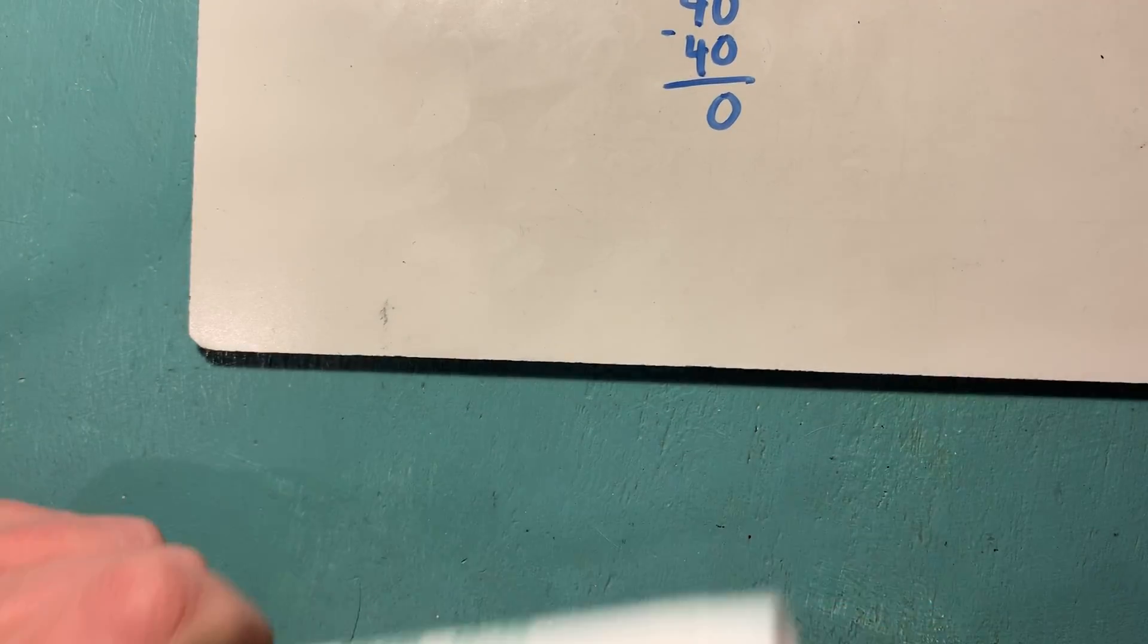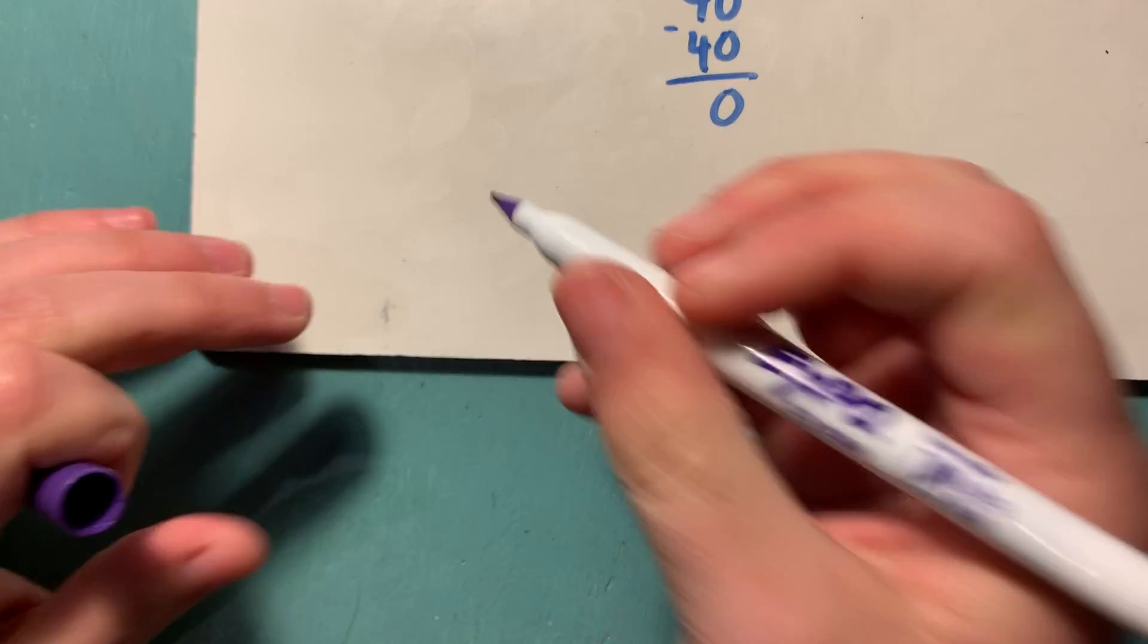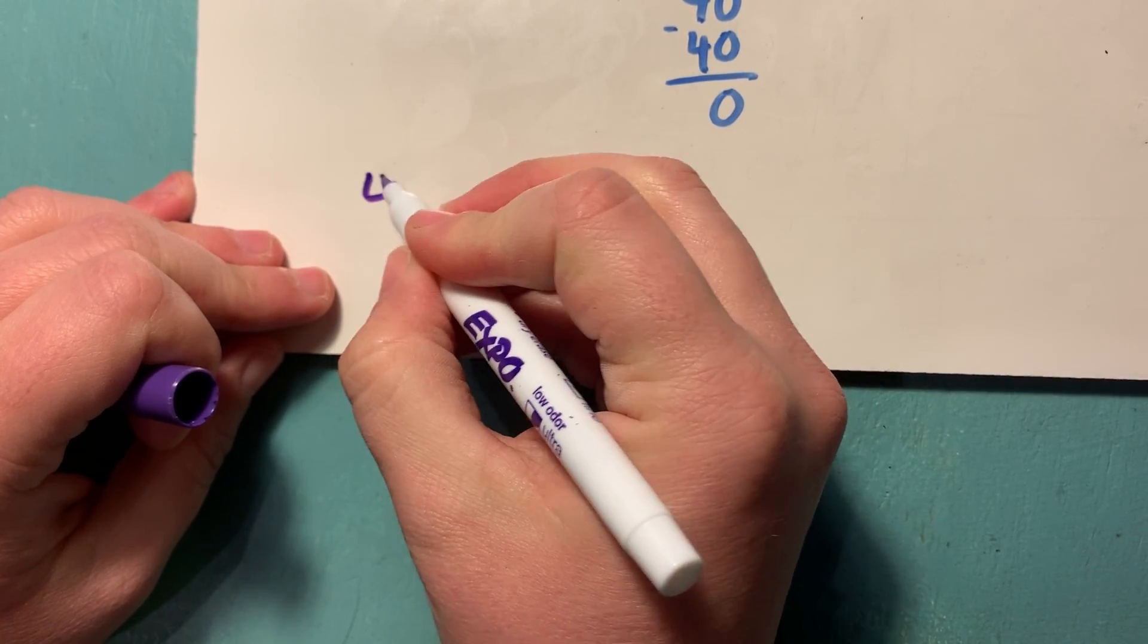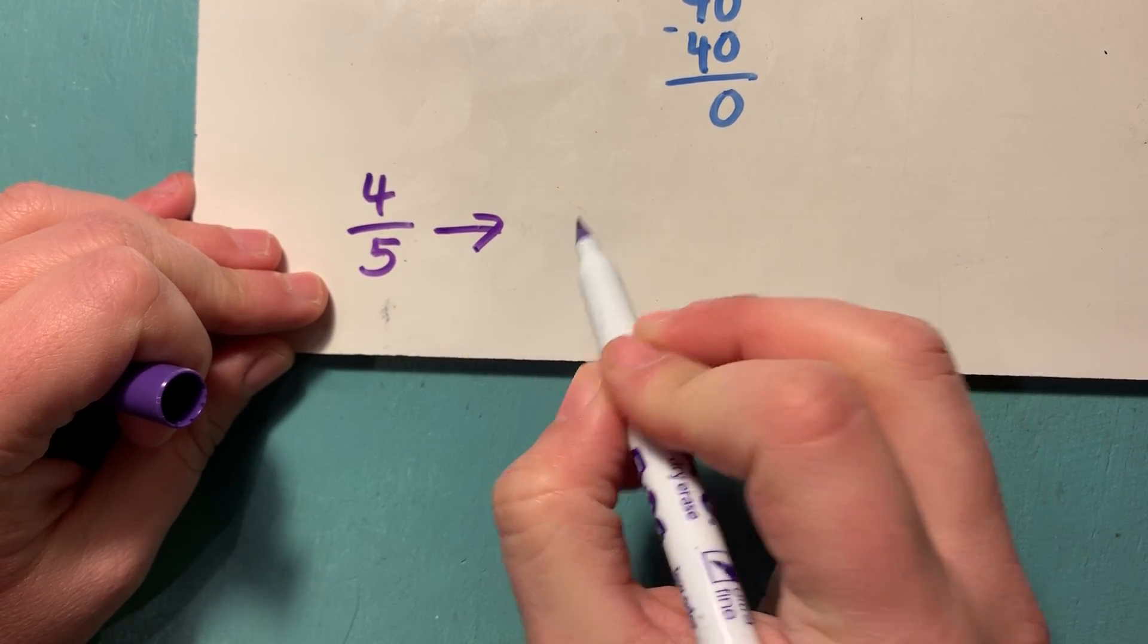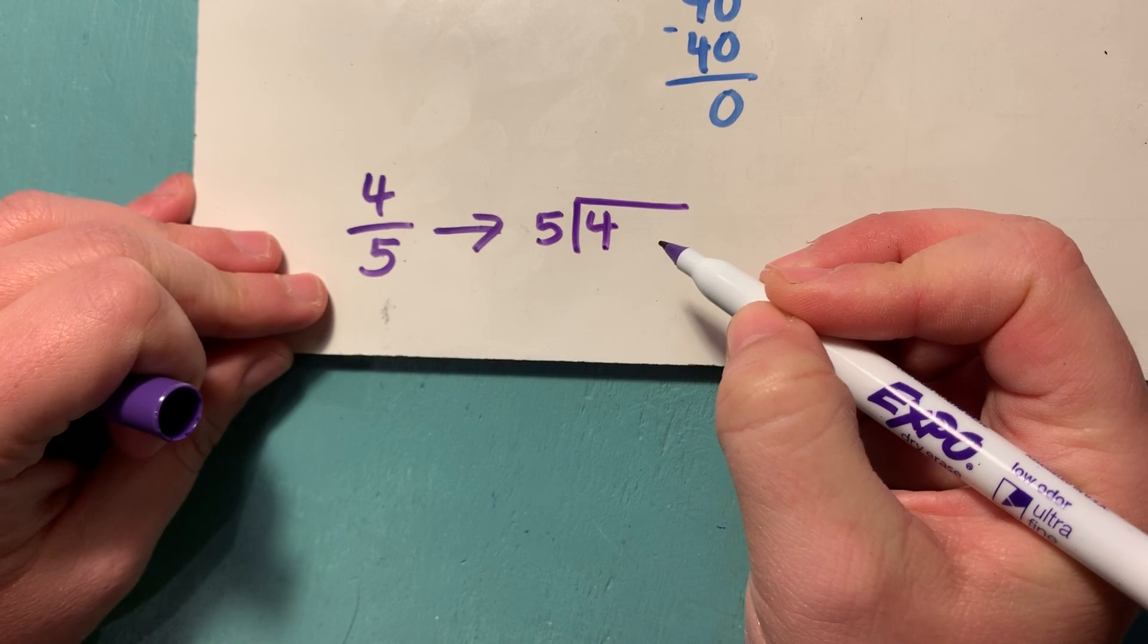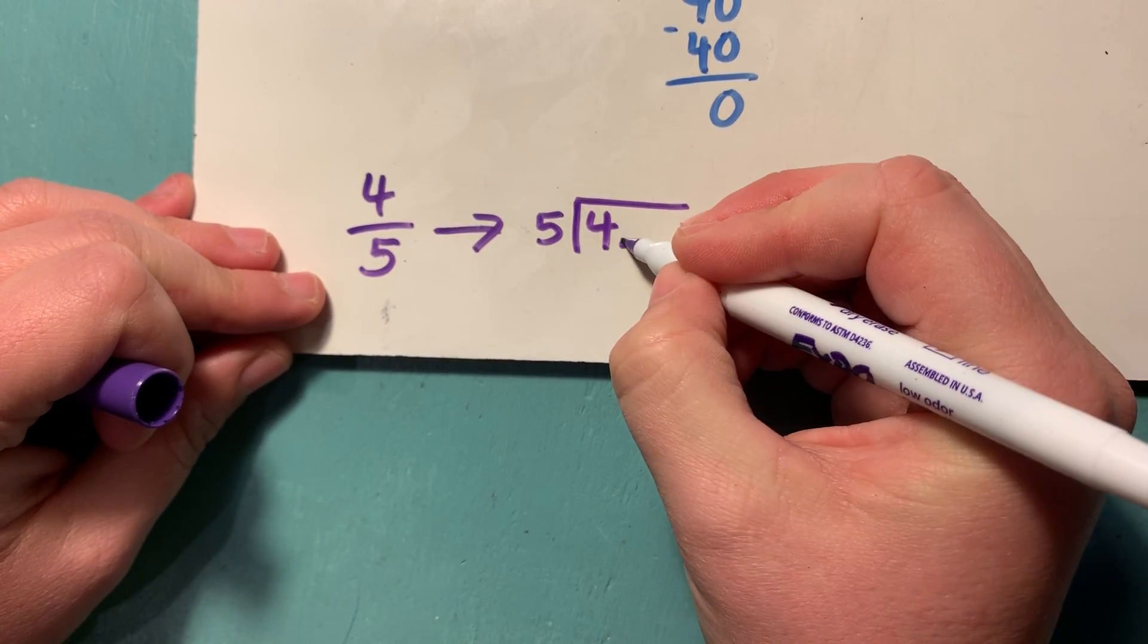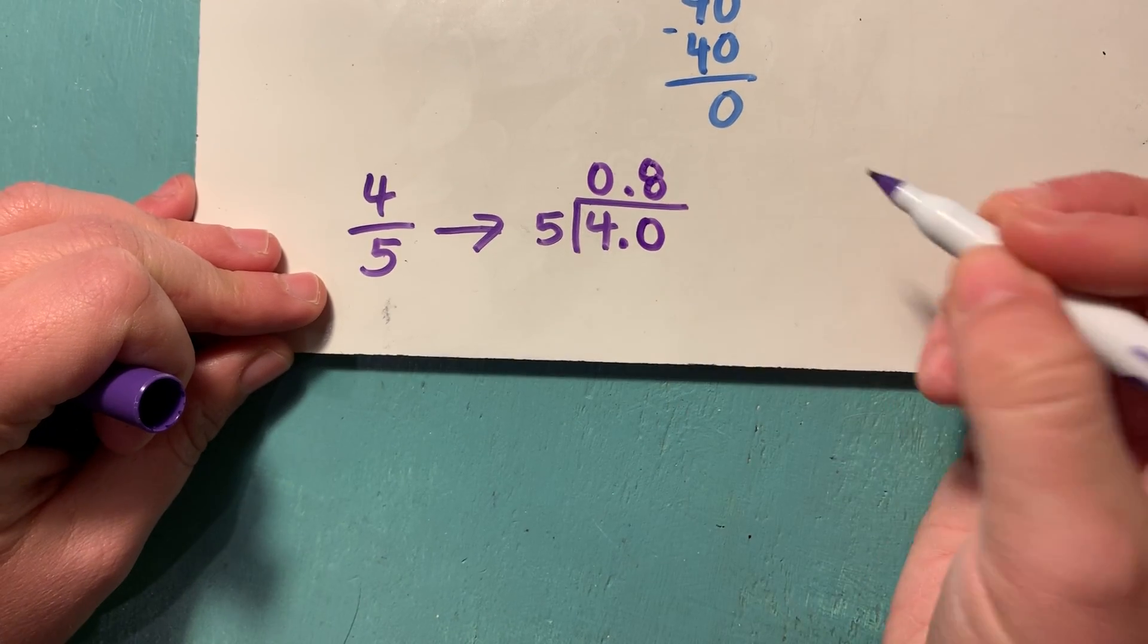Let's do one that is maybe not so gnarly with the division. Let's try four-fifths. So I'm going to have my layover in decimalville here. I'm going to find out what this is as a decimal. Well, five doesn't go into four, but it goes into 48 times.